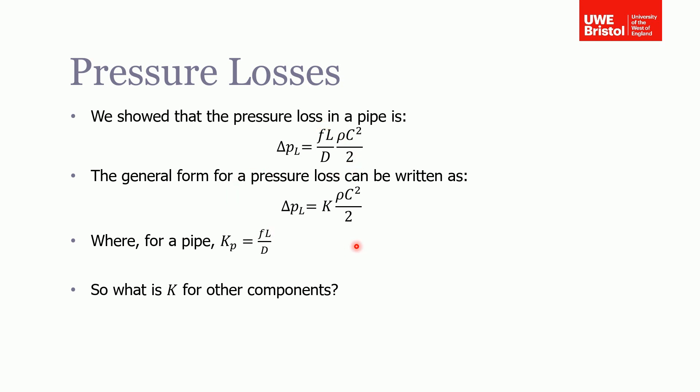Well, the reason for this is this is a general form for pressure loss, so the pressure loss is equal to some constant times the density of the fluid times the velocity of the fluid all divided by two. For example, with a pipe of friction, that constant is equal to the friction factor times length over the diameter.